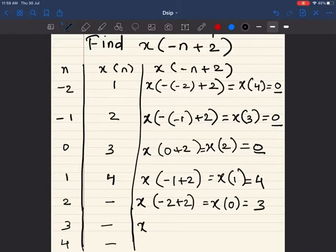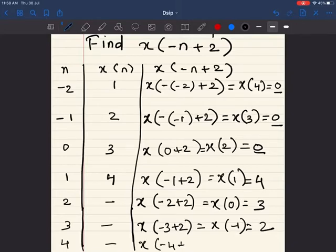Then I have x(-3+2), which is nothing but x(-1), which is 2. And then I have x(-4+2), which is x(-2), the value of which is 1. So now I have 4 non-zero values.